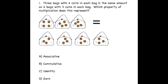3 bags with 4 coins in each bag is the same amount as 4 bags with 3 coins in each bag. Which property of multiplication does this represent?